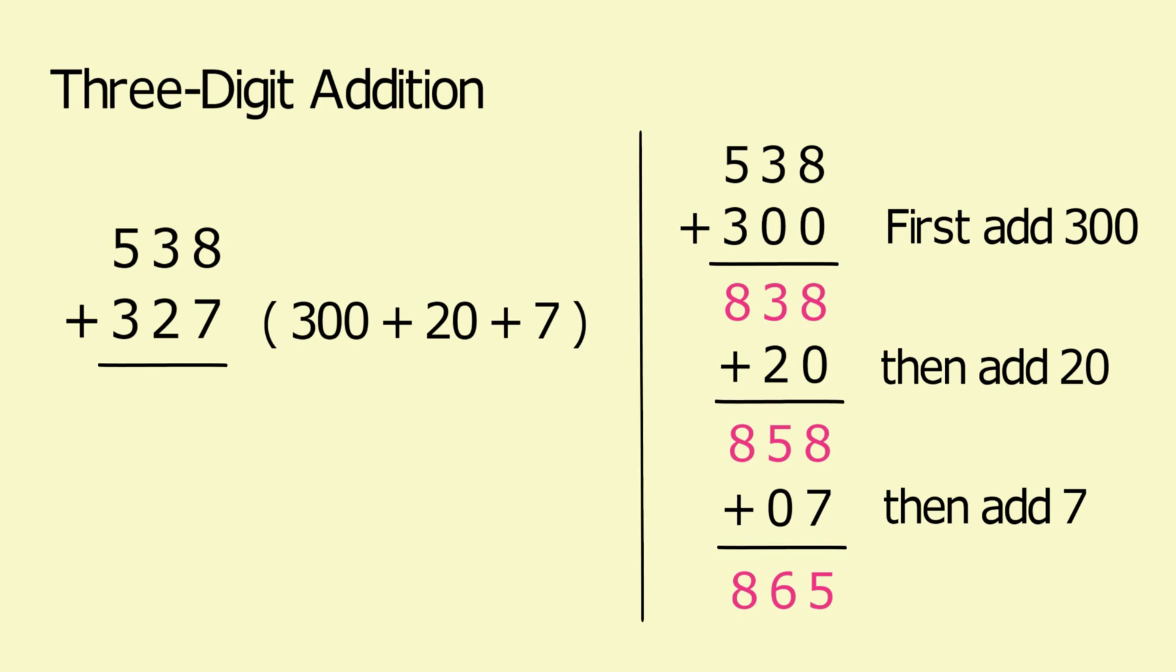All mental addition problems can be done by this method. The goal is to keep simplifying the problem until you are just adding a digit number. Notice that 538 plus 327 requires you to hold 6 digits in your head, whereas 838 plus 27 requires only 5 digits, and 858 plus 7 requires only 4 digits. As you simplify the problem, the problem gets easier.